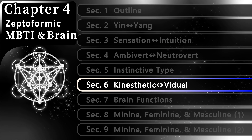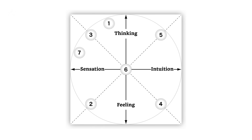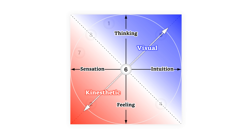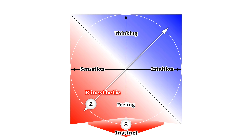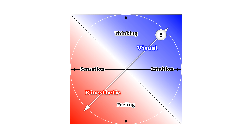Chapter 4, Section 6: Kinesthetic and Visual. As already discussed, thinking and feeling are judging functions, and sensation and intuition are perceiving functions. As illustrated in this figure, the combination of sensing and feeling is related to kinesthetic perception, and the combination of intuiting and thinking is related to visual perception. Type 2 tends to focus on kinesthetic experiences — that is, Type 2 tends to value warm-hearted close contact with others. Type 8, which is the instinctive type, is the most kinesthetic — when he is instinctively perceiving something, the kinesthetic perception is dominant, such as the gut feeling.